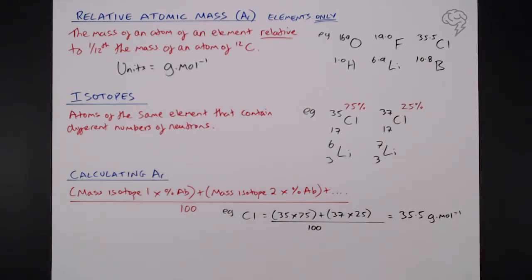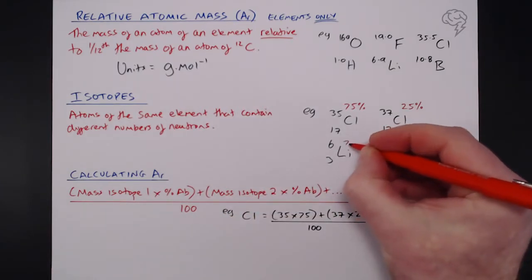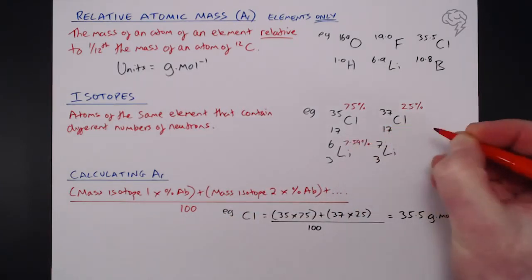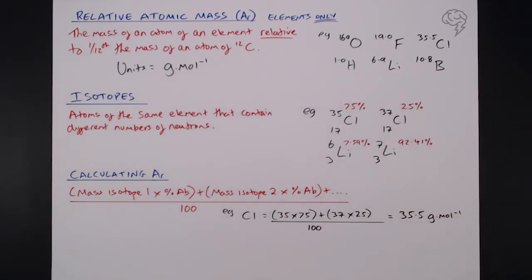In terms of another example, what we've got here are two isotopes of lithium. This is 7.59%, lithium-7, 92.41%. So, our second example here of lithium,